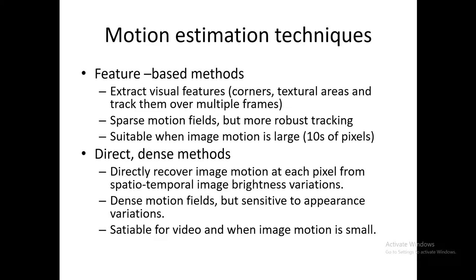In motion estimation, there are generally two approaches. The first is the feature-based method, where we extract visual features like corners and textured areas and track them across multiple frames, giving us a sparse motion field. The second is the direct or dense method, where we directly recover motion at each pixel from spatial-temporal image brightness variations. This gives dense motion fields but can be sensitive to appearance variations, and is suitable for video where things don't move very fast.